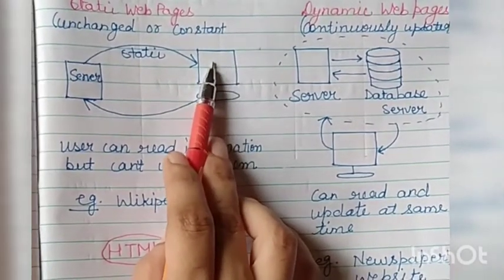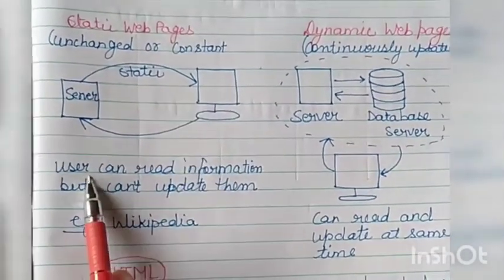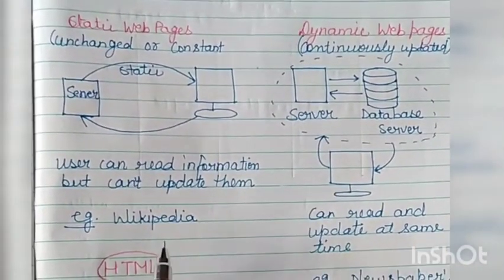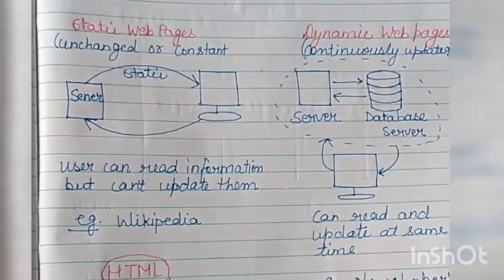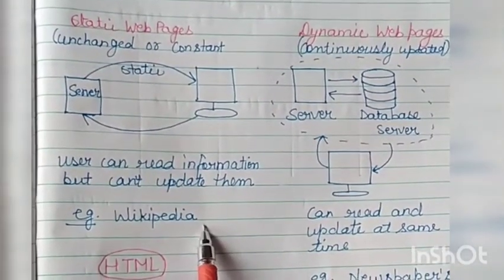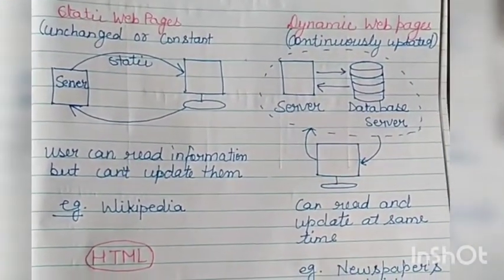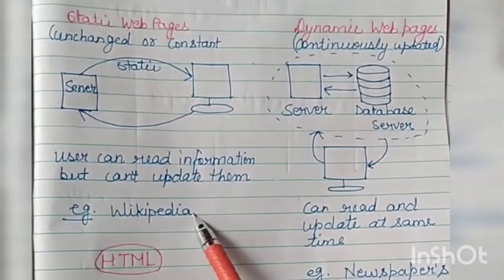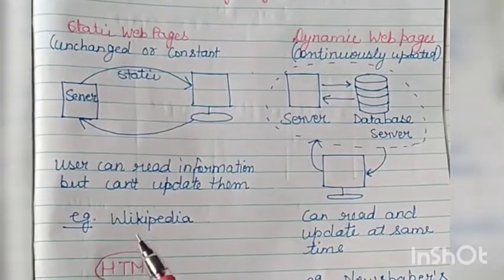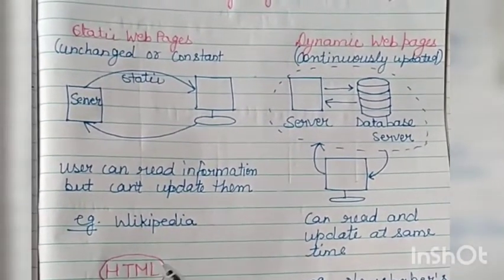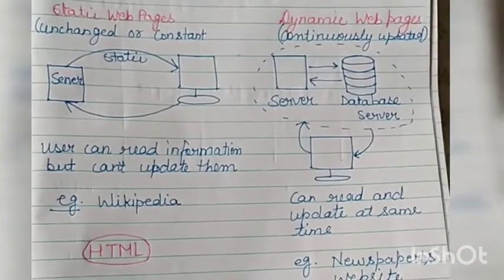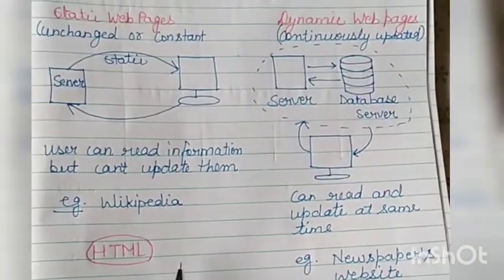But you cannot make any changes to the web page. These web pages will not be updated. Users can read information but cannot update them. For example, whenever you read any content on Wikipedia, which is a website where you can search information about any topic, you cannot make changes on it. These types of web pages can be made with the help of HTML, that is Hypertext Markup Language.